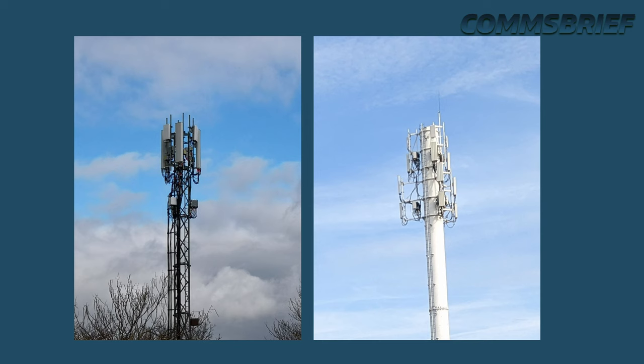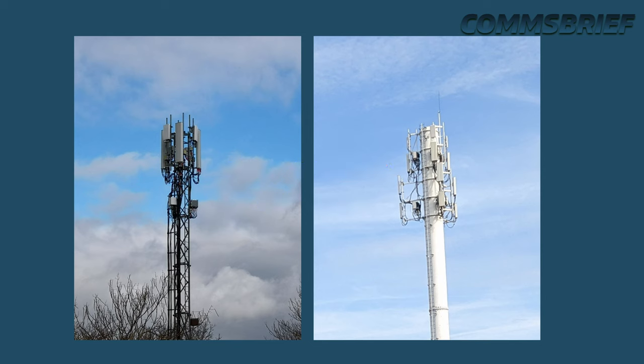A mobile network consists of a large number of base stations. Base stations are these tall masts you see in towns, cities, and motorways or highways or freeways as you may call them elsewhere. These base stations transmit and receive signals to create a mobile network coverage around them. However, the coverage is limited to the reach of a single base station.